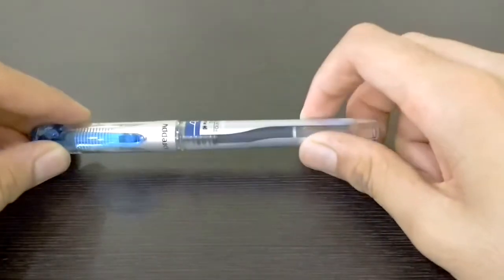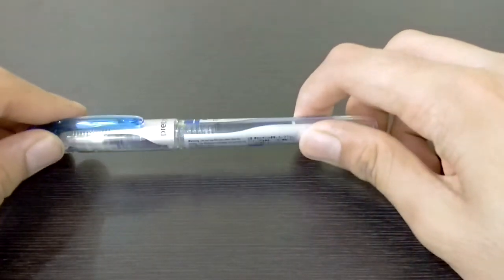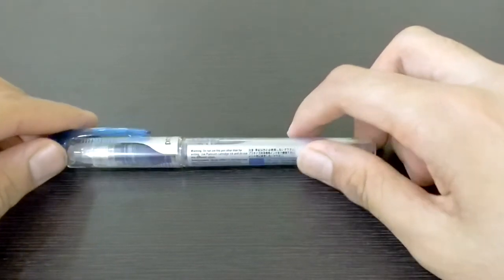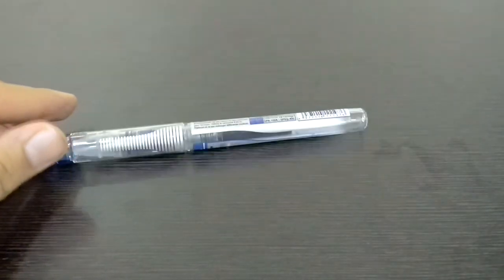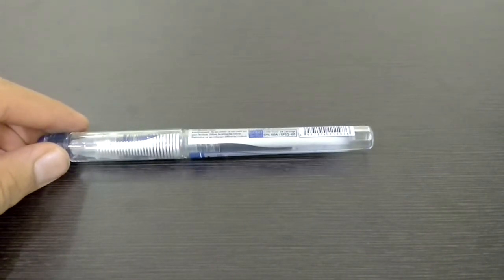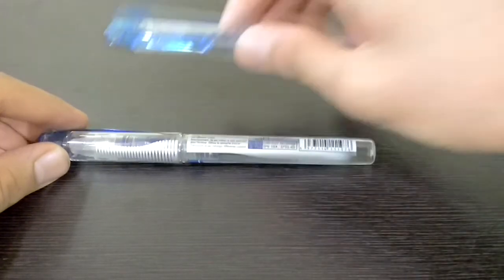The Platinum Preppy can be compared to many different fountain pens in terms of nib size and looks. Starting with the Preppy variants, the first pen which I can compare with the Platinum Preppy 02 extra fine will be the Platinum Preppy 05 medium nib.